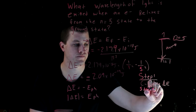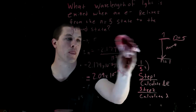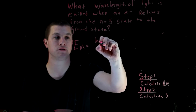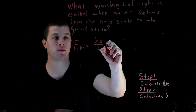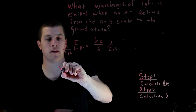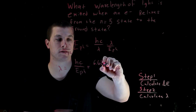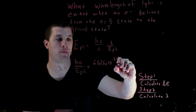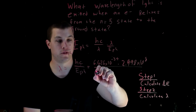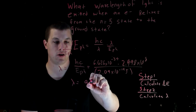Step two is to calculate lambda. To calculate lambda, we use the equation E_photon equals hc over lambda. Rearranging, lambda equals hc over the energy of our photon. Plugging in Planck's constant 6.626 times 10 to the minus 34, the speed of light 2.998 times 10 to the 8th, divided by the photon energy 2.09 times 10 to the minus 19 joules, we get lambda equal to 950 nanometers.